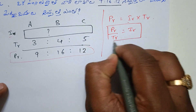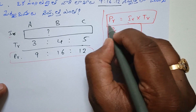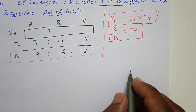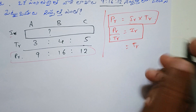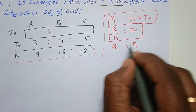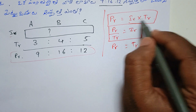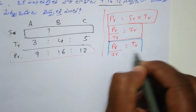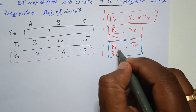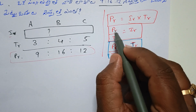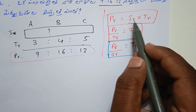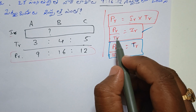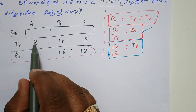Since we have the additional capital given, we write the formula: if IR equals TR, then now we have the time ratio. Investment ratio equals profit ratio divided by time ratio. Profit ratio is 9, 16, 12; time ratio is 3, 4, 5.